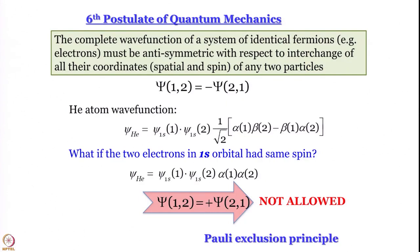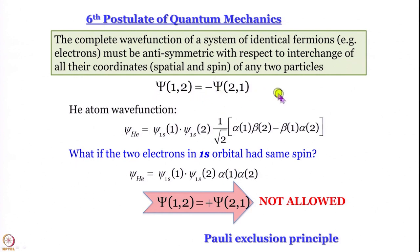The reason we worry about whether functions are symmetric or antisymmetric with respect to exchange is the Pauli principle — the sixth postulate of quantum mechanics — which says that for fermions like electrons, the complete wave function must be antisymmetric with respect to exchange. So psi(1,2) must equal minus psi(2,1): if you interchange the labels 1 and 2, the wave function must change sign.